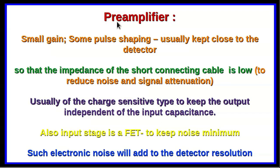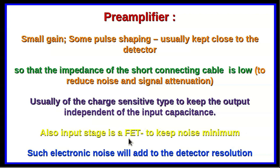The pre-amplifier normally has only a nominal gain and some pulse shaping, and is kept close to the detector. This is because the impedance of the short connecting cable will be low, reducing noise and avoiding signal attenuation. The pre-amplifier is normally of the charge-sensitive type so the output is independent of the input capacitance. To keep noise to a minimum, the input stage is a field-effect transistor (FET) stage, since electronic noise adds to the detector resolution.